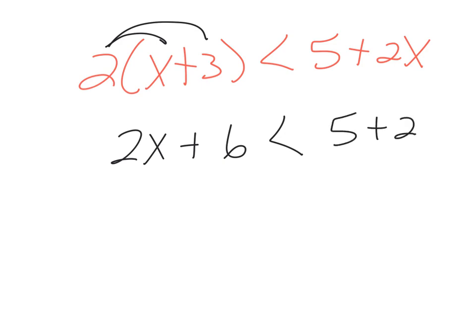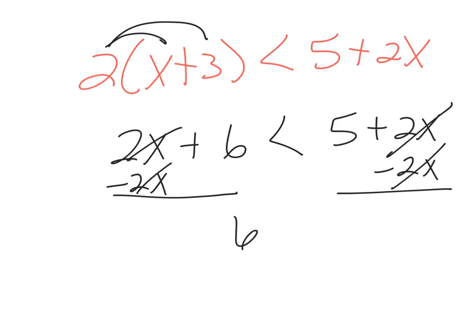Just bring down the 5 plus 2x. I'm then going to subtract 2x from both sides because I want to get one to the other. And when I do that, notice what happens is that the x's disappear and I'm left with 6 is less than 5. Unlike the previous problem, this is not true. And because this is not true,